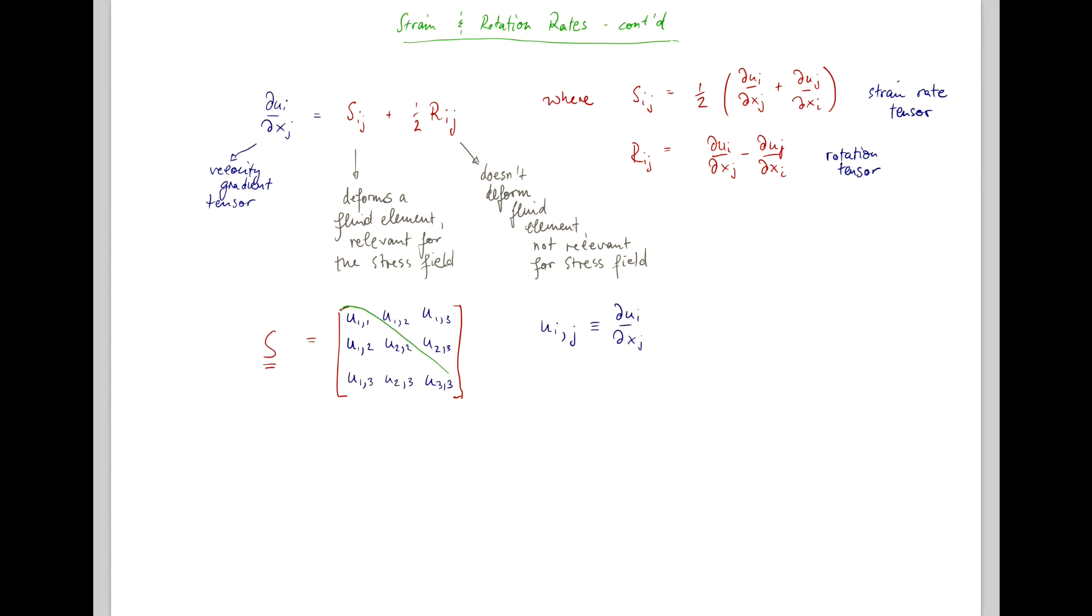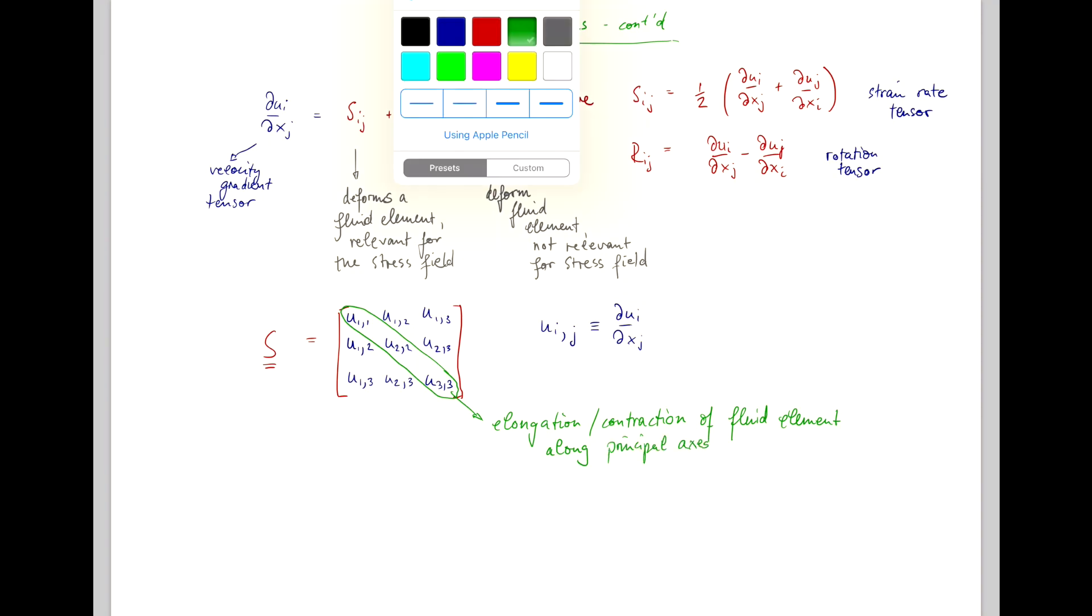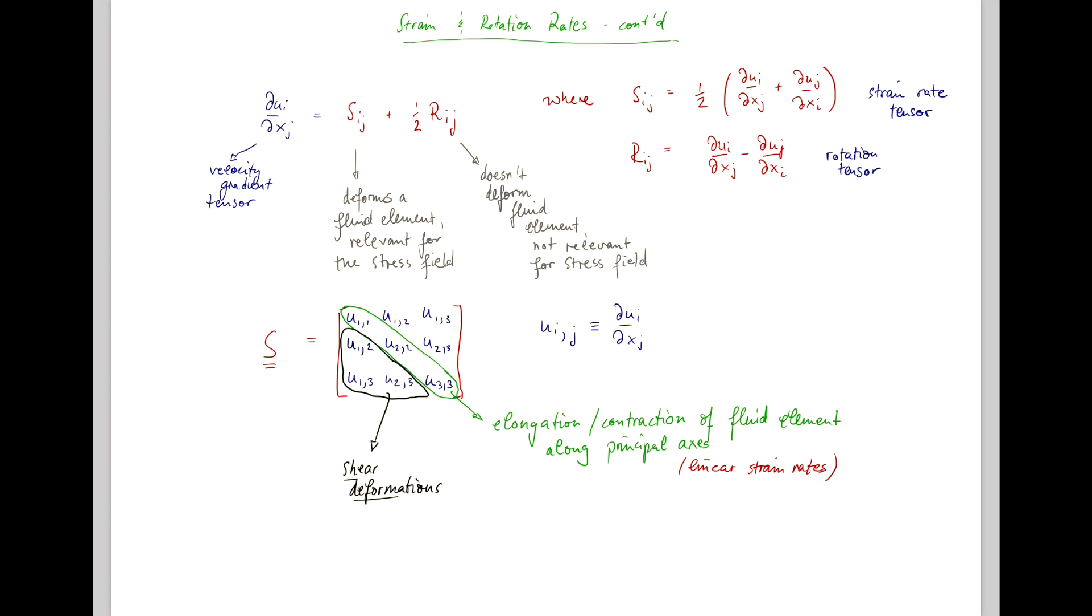Now the diagonal elements of this matrix correspond to elongation or contraction of a fluid element along the principal axis, we refer to these as the linear strain rates, whereas the off-diagonal elements are the shear deformations.